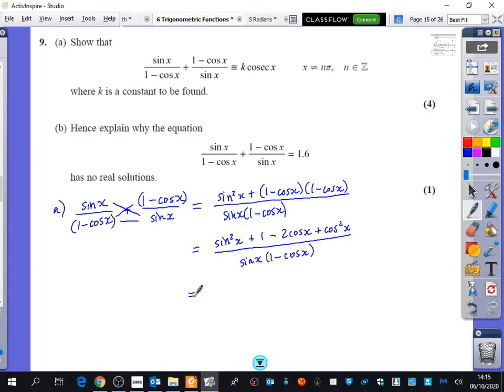So the numerator, what's the numerator going to simplify to? Can you see anything special that will happen with the numerator? Chas? Sine x squared plus cos x squared. Cos squared x. Yep. Good. Sine squared x plus cos squared x is going to be 1. So this yellow bit is 1, and I'm adding on another 1. 1 add 1 is 2. So the numerator is just 2 minus 2 cos x all over sine x 1 minus cos x.